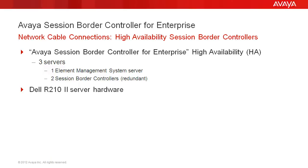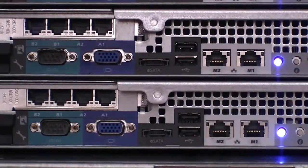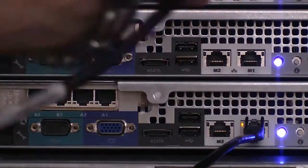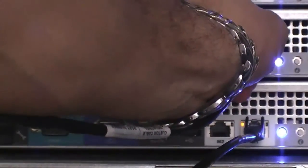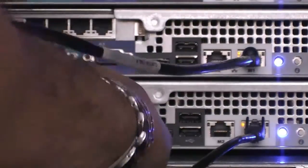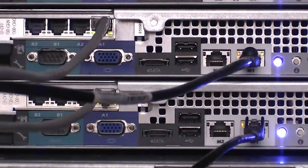This video shows typical Dell R210-2 server connections. We first connect the management network to the M1 ports. Next we connect the enterprise network to the A1 ports. We then connect the public network to the B1 ports.